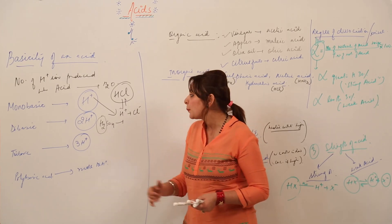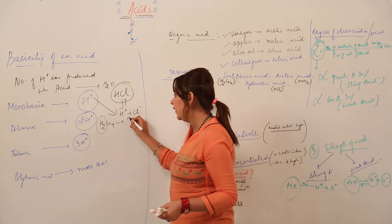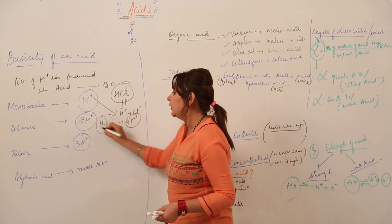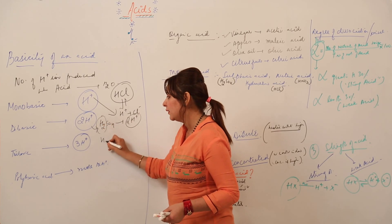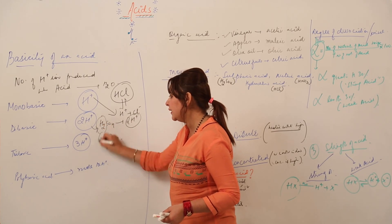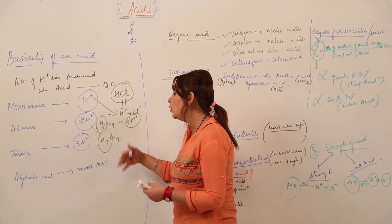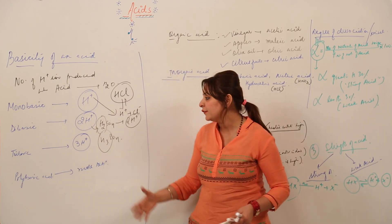As it contains two H ions, it will be giving two hydrogen ions, so it is regarded as di basic. Similarly, this phosphoric acid is tri basic, and more than three we have poly basic acid.